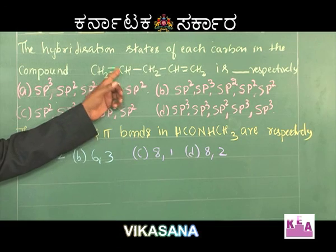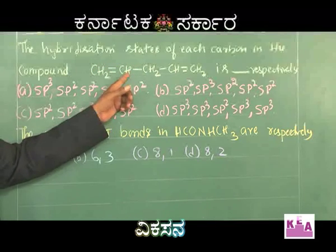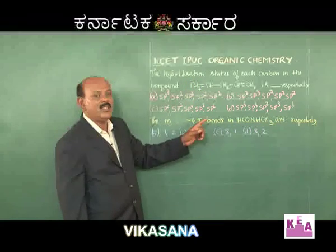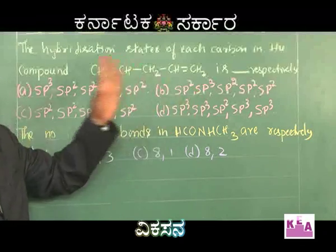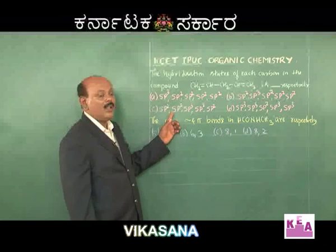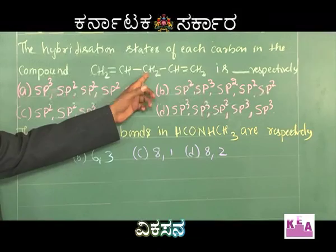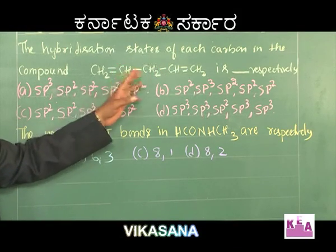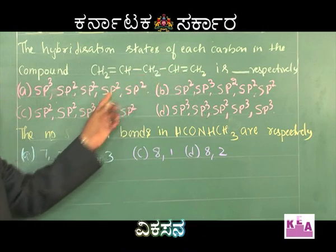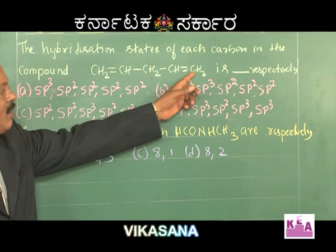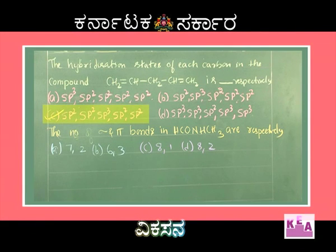The second carbon atom is bonded to two carbon atoms and one hydrogen atom; therefore it makes use of SP2 hybridization. The third carbon atom is bonded to four atoms; therefore it makes use of SP3 hybridization. The fourth carbon atom is bonded to three atoms, so it makes use of SP2 hybridization, and the last carbon atom is also bonded to three atoms, so it makes use of SP2 hybridization. Therefore, the correct option is C.